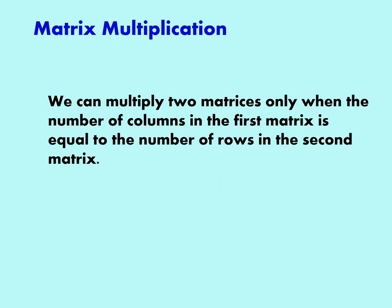We can multiply two matrices only when the number of columns in the first matrix is equal to the number of rows in the second matrix.